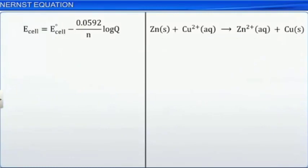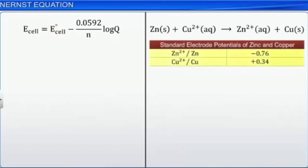Here's a strategy for solving the problem. First, you need to find E cell at standard conditions using our table of standard electrode potentials. Then, use the Nernst equation.